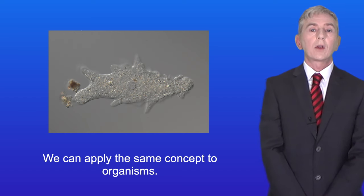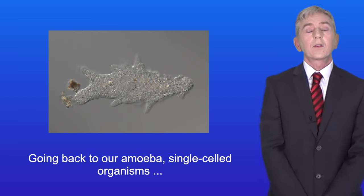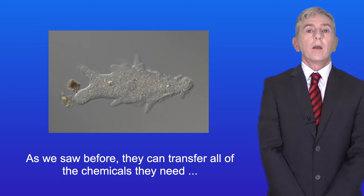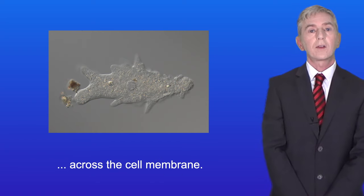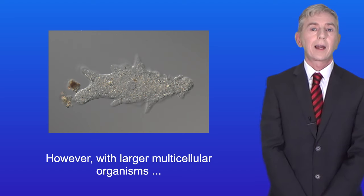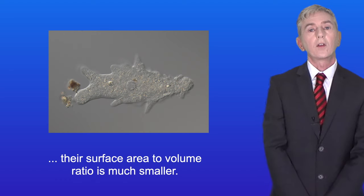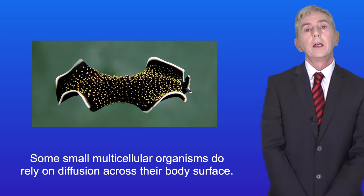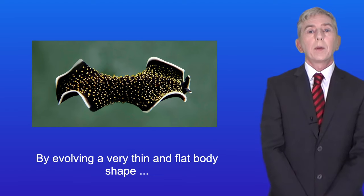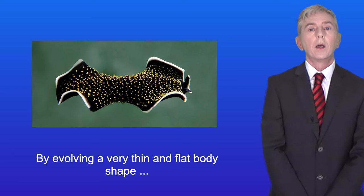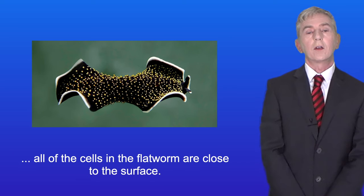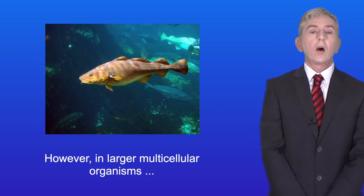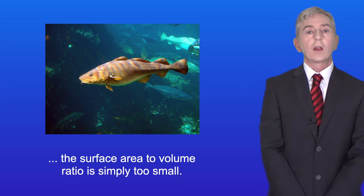We can apply this same concept to organisms. Single-celled organisms like amoeba have a relatively large surface area to volume ratio and can transfer all the chemicals they need across the cell membrane. However, larger multicellular organisms have a much smaller surface area to volume ratio. Some small multicellular organisms, like the flatworm, do rely on diffusion across their body surface — by evolving a very thin, flat body shape, all cells remain close to the surface. But in larger multicellular organisms, the surface area to volume ratio is simply too small.